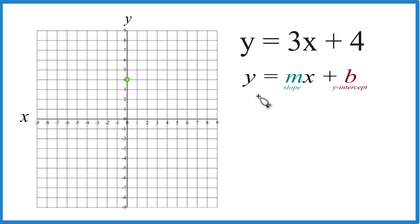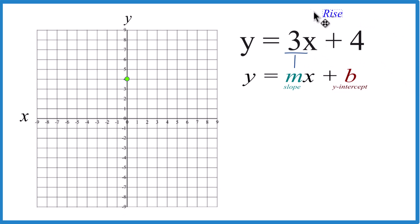So for the slope, we have m, that's 3. But it's helpful to call this 3 over 1 because now you can call this rise over run.